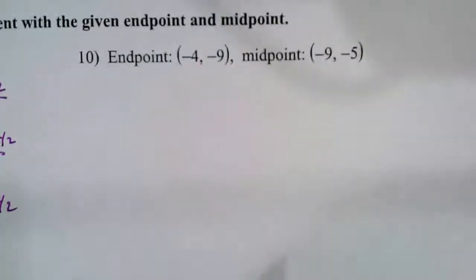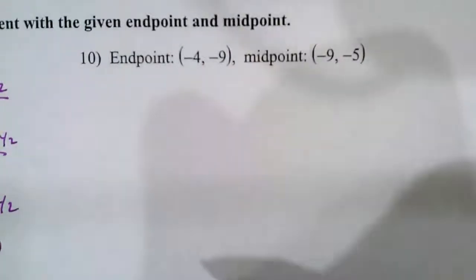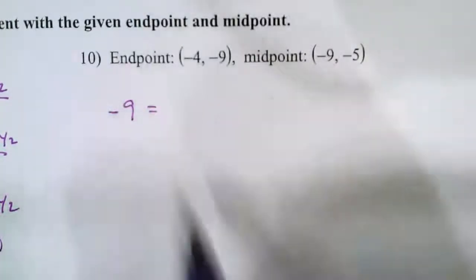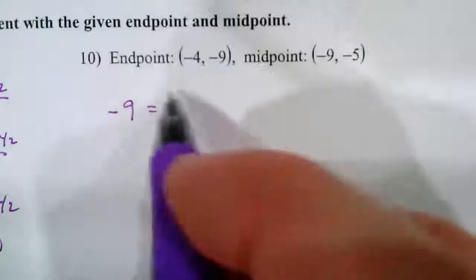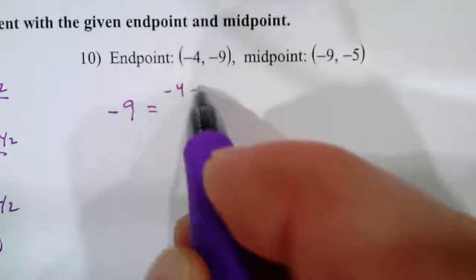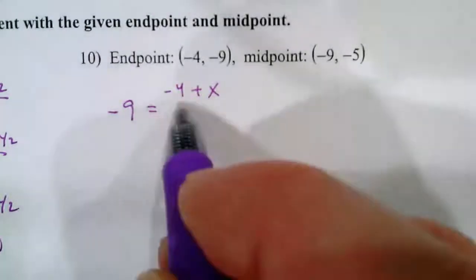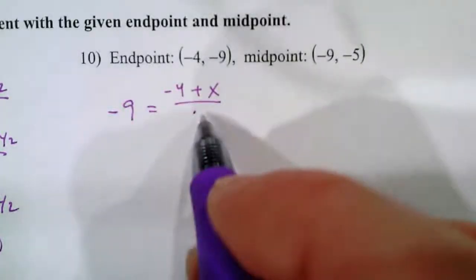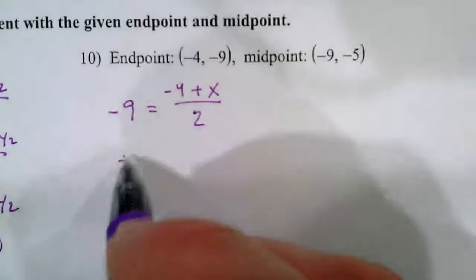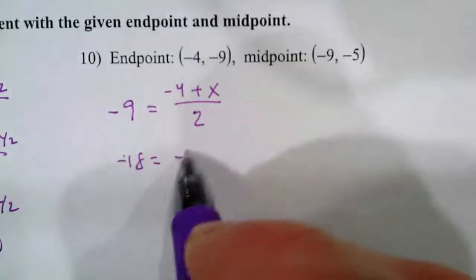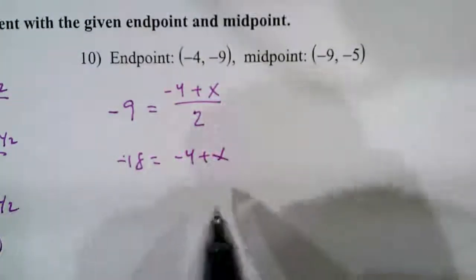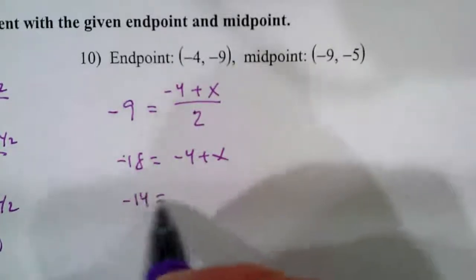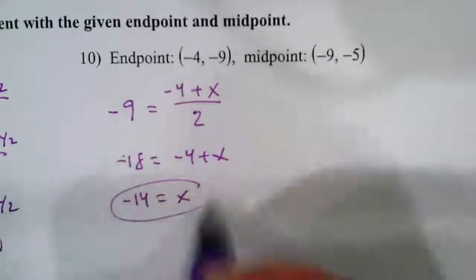Let's take a look here — I'm going to go a little quicker this time. We're going to have negative 9 equals negative 4 plus x over 2 — I'm just going to leave it as x. Multiply both sides by 2: negative 18 equals negative 4 plus x. Add 4 to both sides: negative 14 equals x.